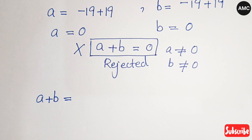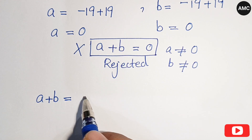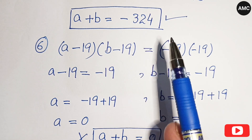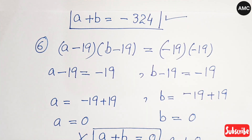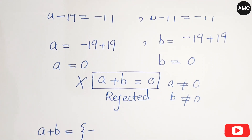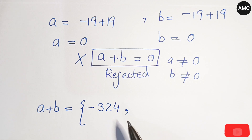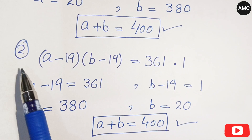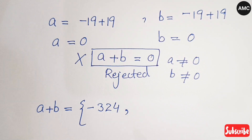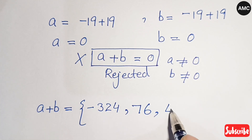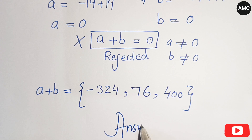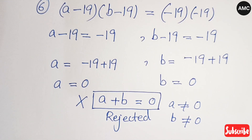Our final values of a plus b are: from cases 4 and 5 we get minus 324, from cases 1 and 2 we get 400, and from case 3 we get 76. So there are three possible solutions for a plus b: minus 324, 76, and 400. This is our final result.